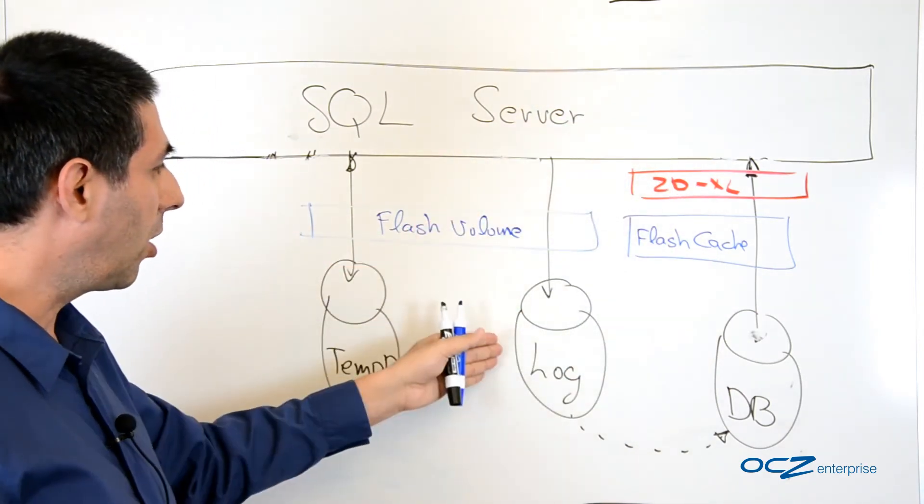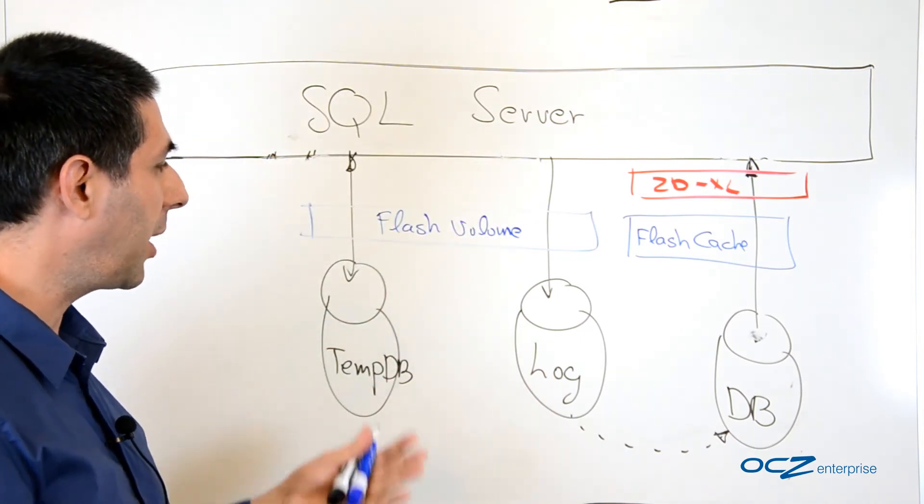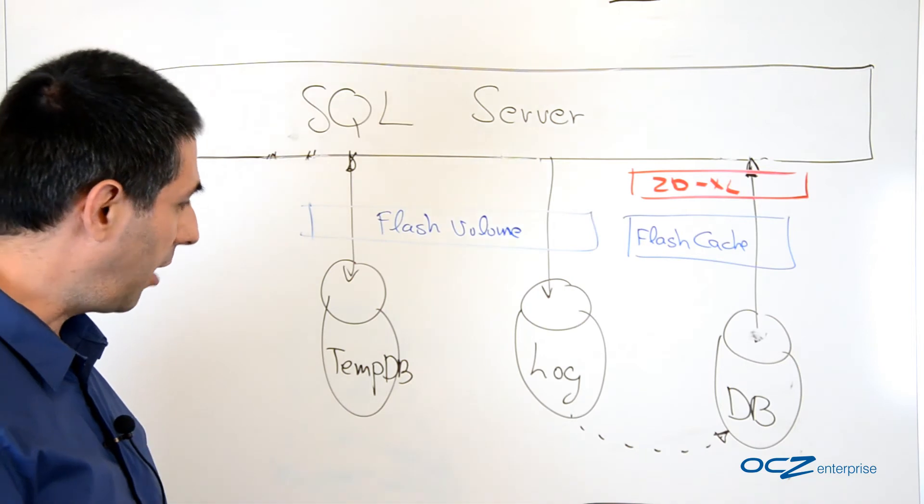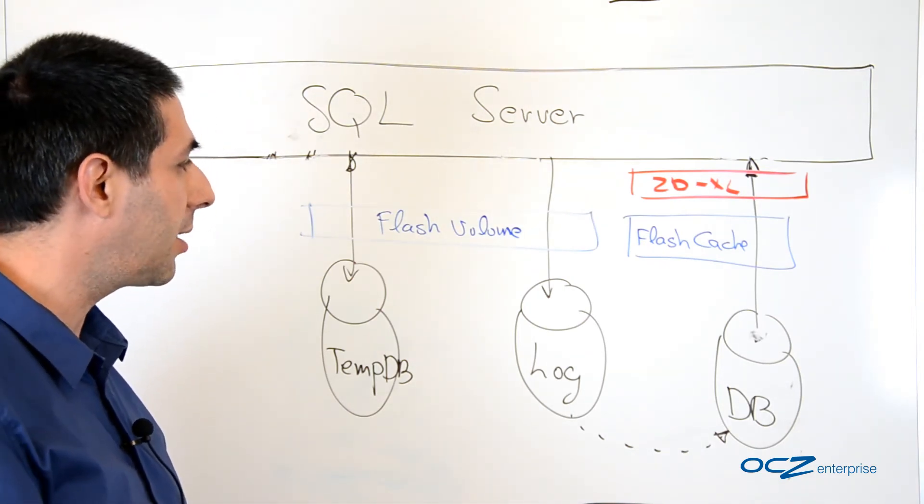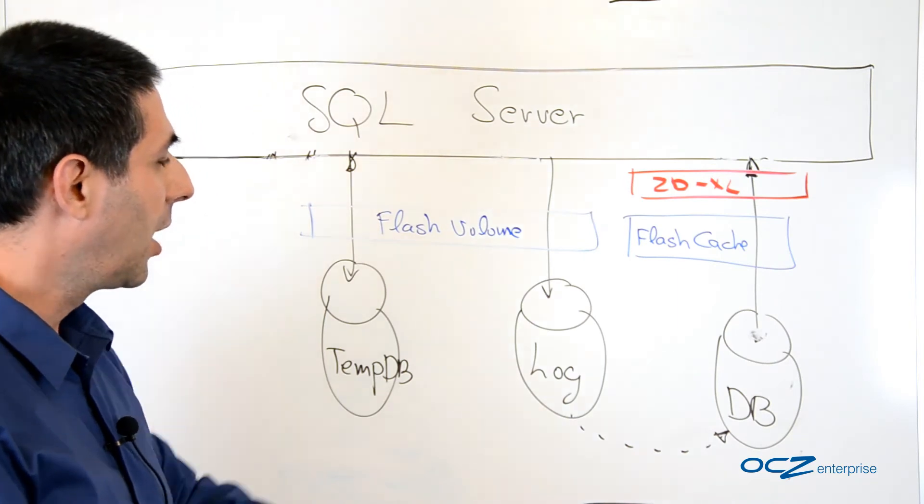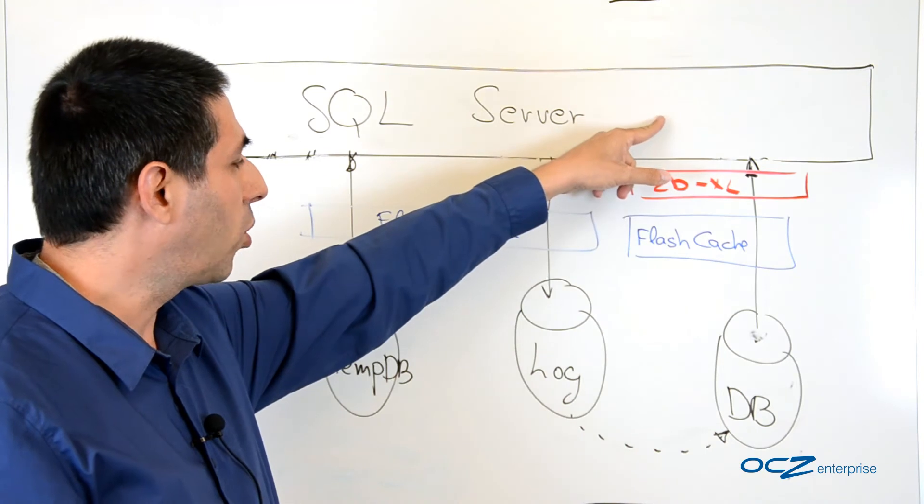The tempdb and the log are directly written and read to the flash volume, so they can have the benefit of the flash high performance relative to regular hard disk or even fast SAN. And the database is cached by the flash cache coming towards the SQL server.